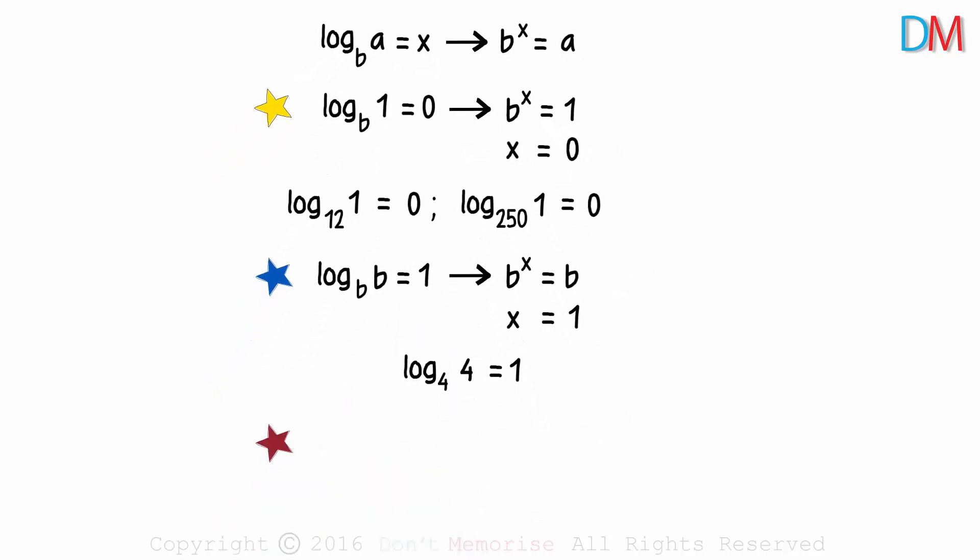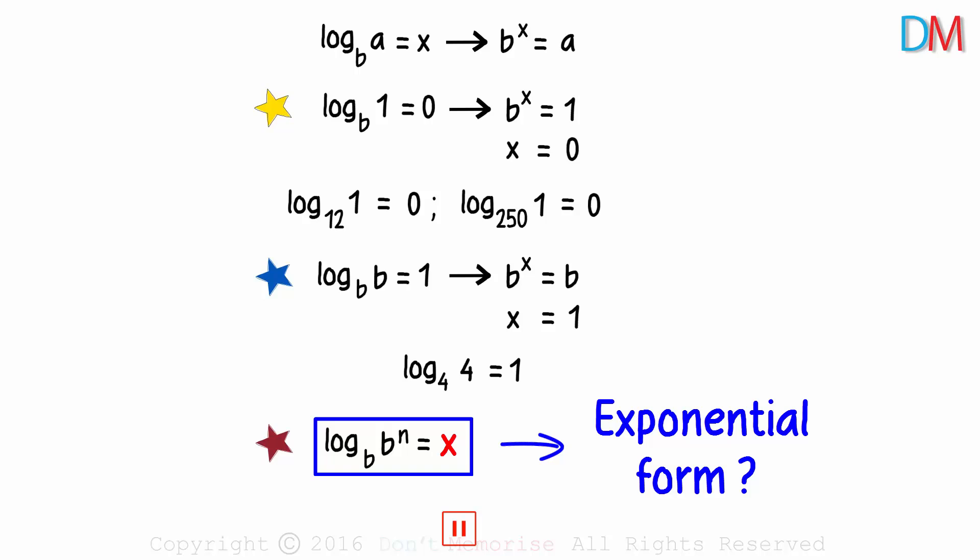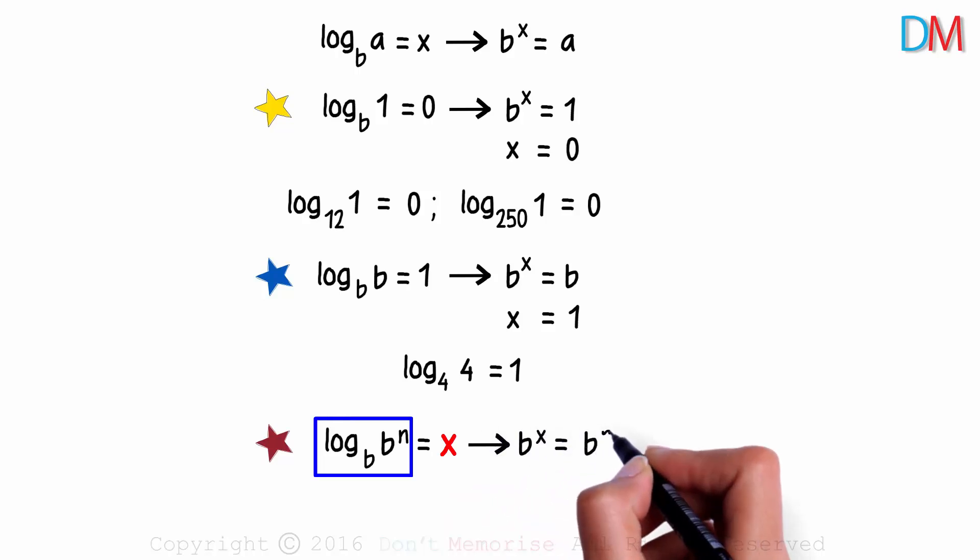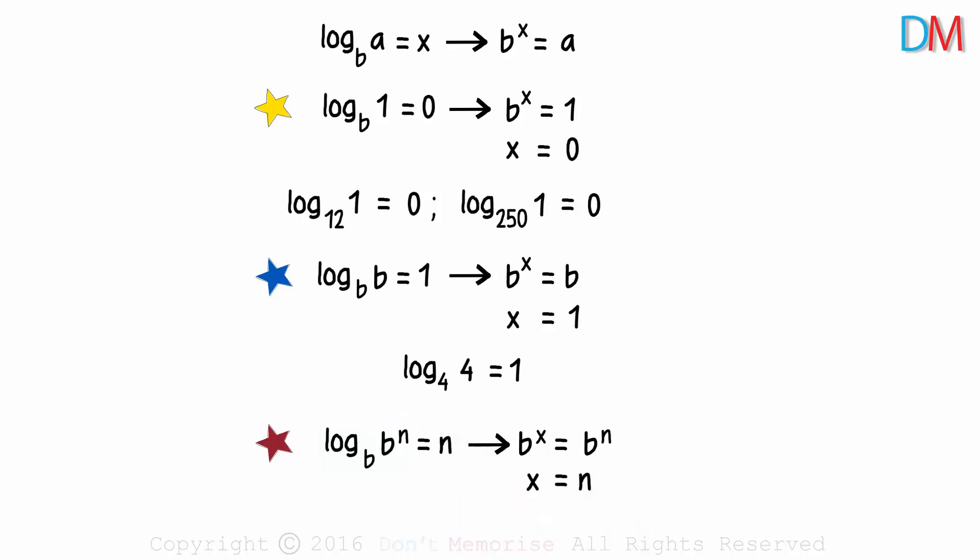The third one is pretty cool! It talks about the log of b raised to n to the base b. Assuming this equals x, try writing this in the exponential form. It is written as b raised to x is equal to b raised to n. It's pretty clear! x has to be equal to n. So the log of b raised to n to the base b will equal n. An example would be, log of 11 cube to the base 11 will equal 3.